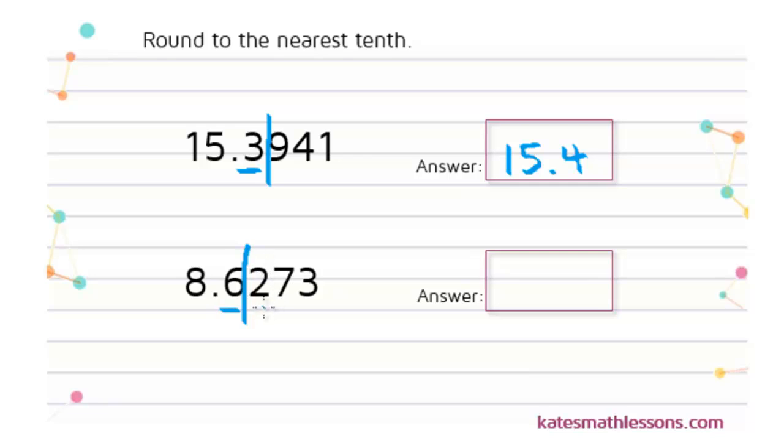And since this is 4 or less that tells me I need to keep the number in the tenth spot the same. So my rounded answer for this one to the nearest tenth would be 8.6.